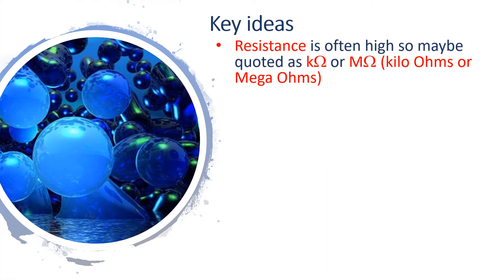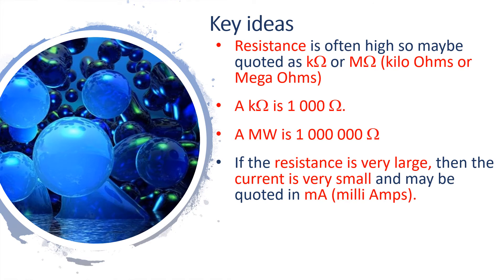Also, resistance is often very high, so may be quoted as kilo ohms or mega ohms. A kilo ohm is a thousand ohms, and a mega ohm is a million ohms. If the resistance is very large, then the current is very small and may be quoted in milliamps, which is a thousandth of an amp.